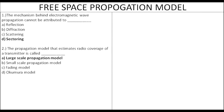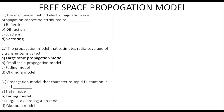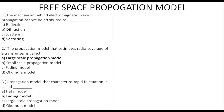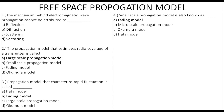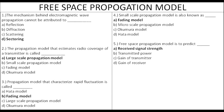The large scale propagation model deals with the received signal at distance. The rapid fluctuation propagation model — the fading model — is called the small scale propagation model. This is used for the performance of wireless channels.